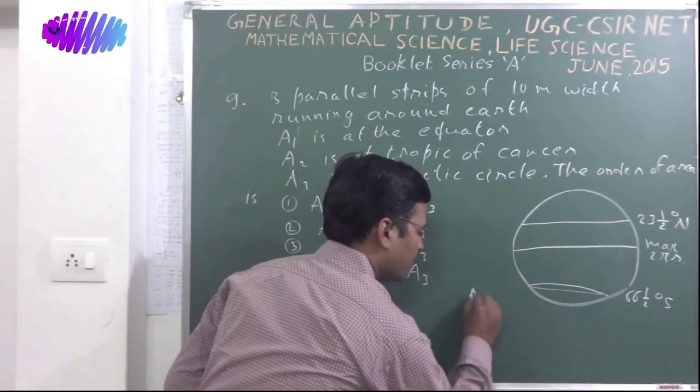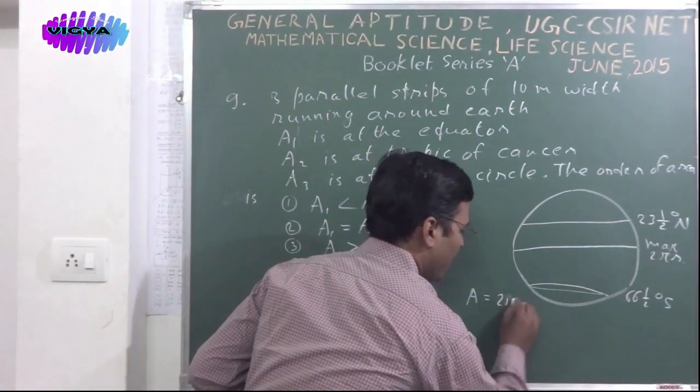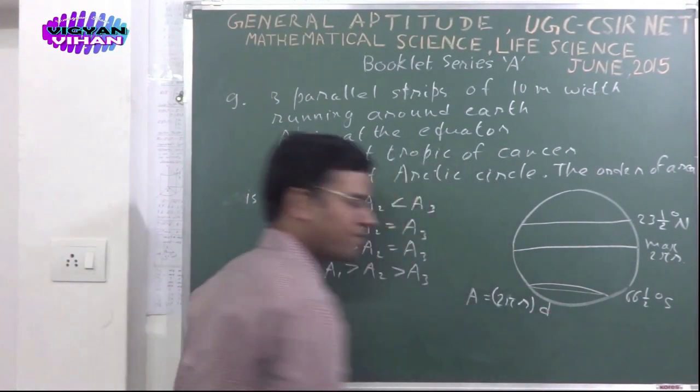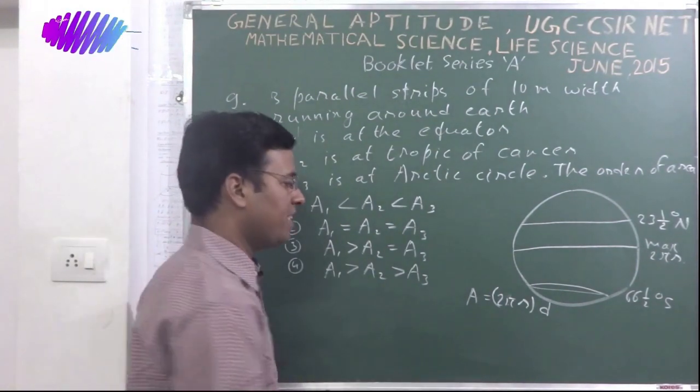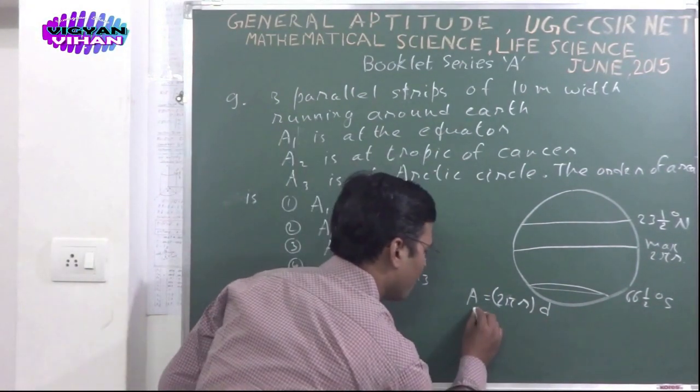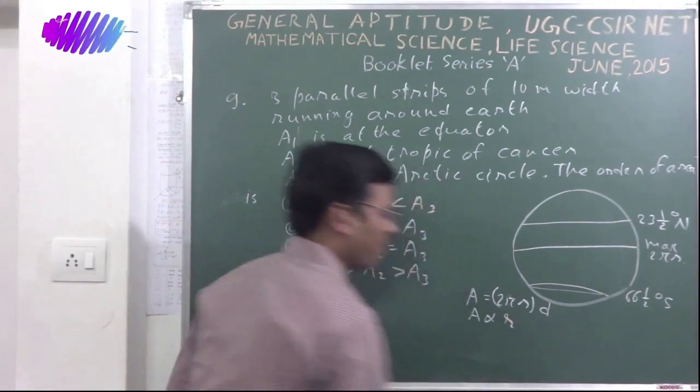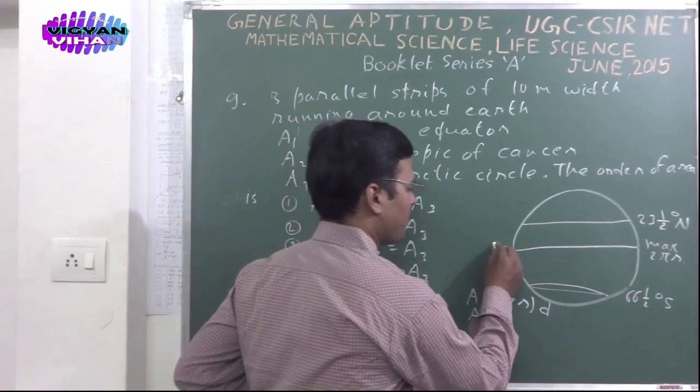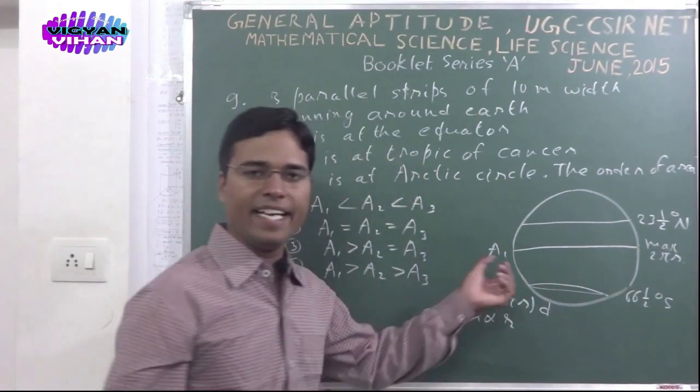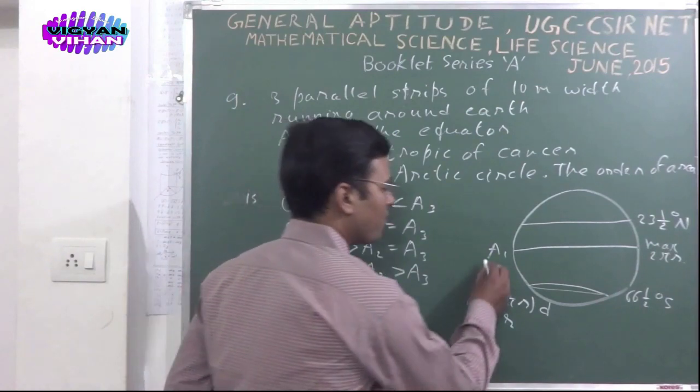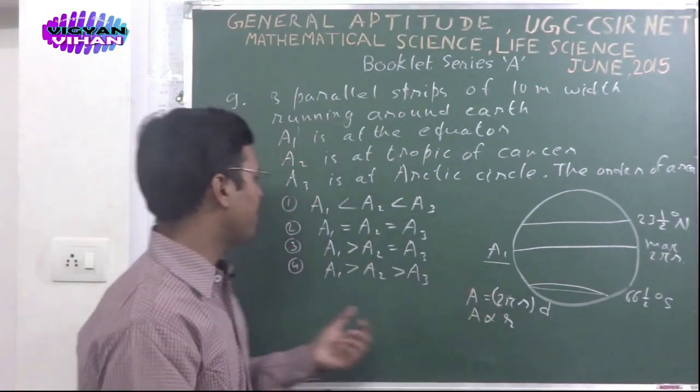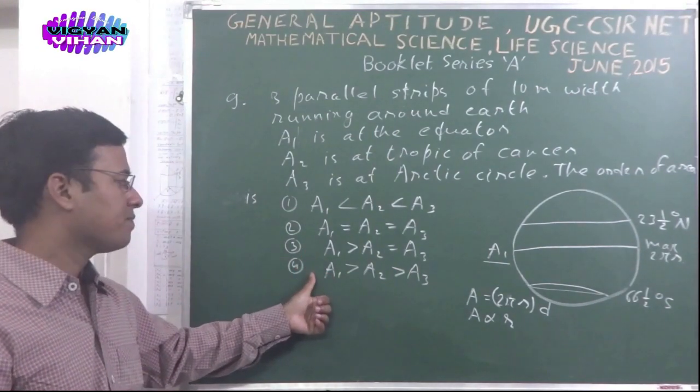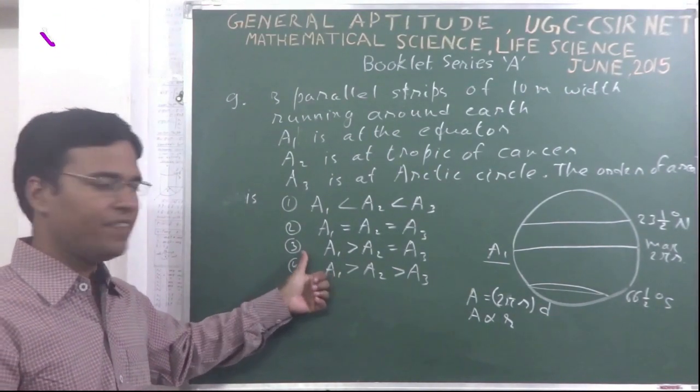So the least circumference is at Arctic Circle. Their area can be calculated by 2 pi R multiplied with width D. All have same width D. So A is proportional to R. The circle at Equator, that is A1 has maximum radius. So the area A1 is at maximum level. There are 2 options, 3 and 4, having area A1 at maximum.